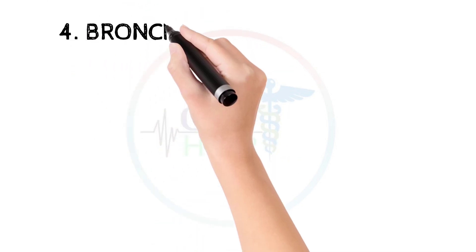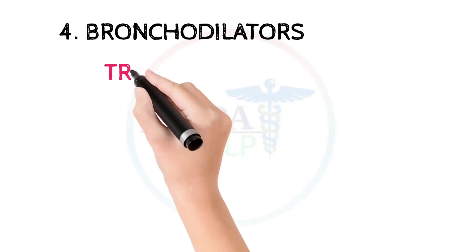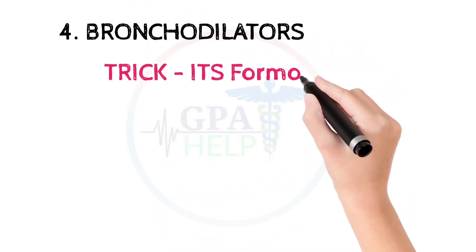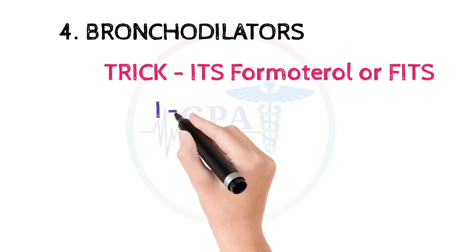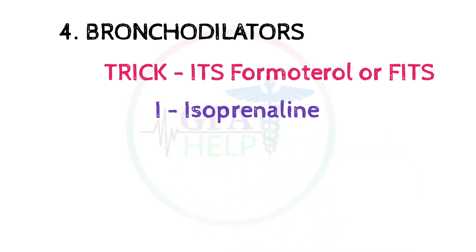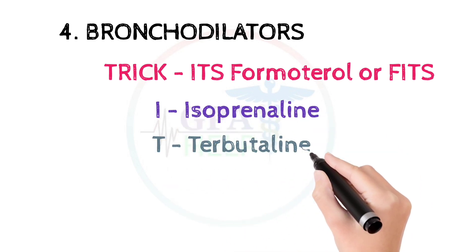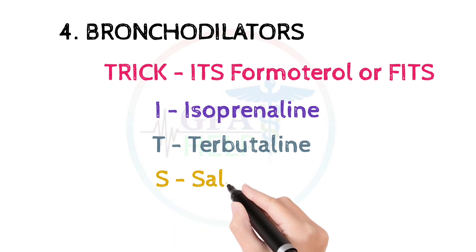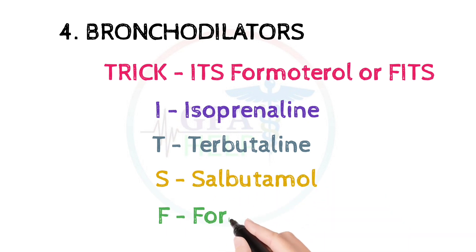The fourth class is bronchodilators. These drugs can be learned by the trick: FITs (it's formoterol). F for formoterol, I for isoprenaline, T for terbutaline, and S for salbutamol.